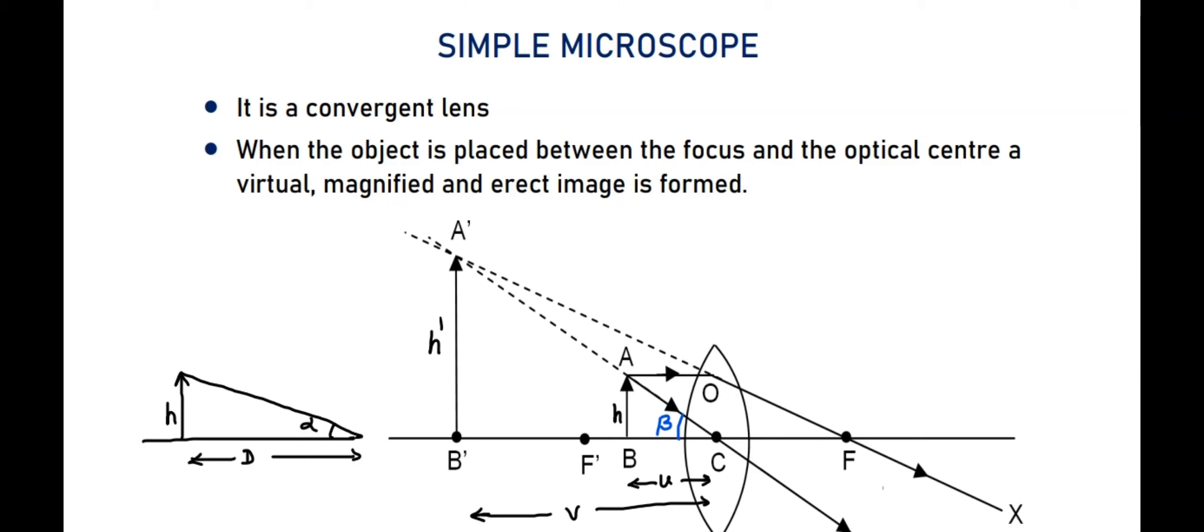Here, in this ray diagram, this is the convex lens, thin convex lens we are taking with smaller focal length. And this is the focus. Between the focus and optic center, we are taking the object of height h.